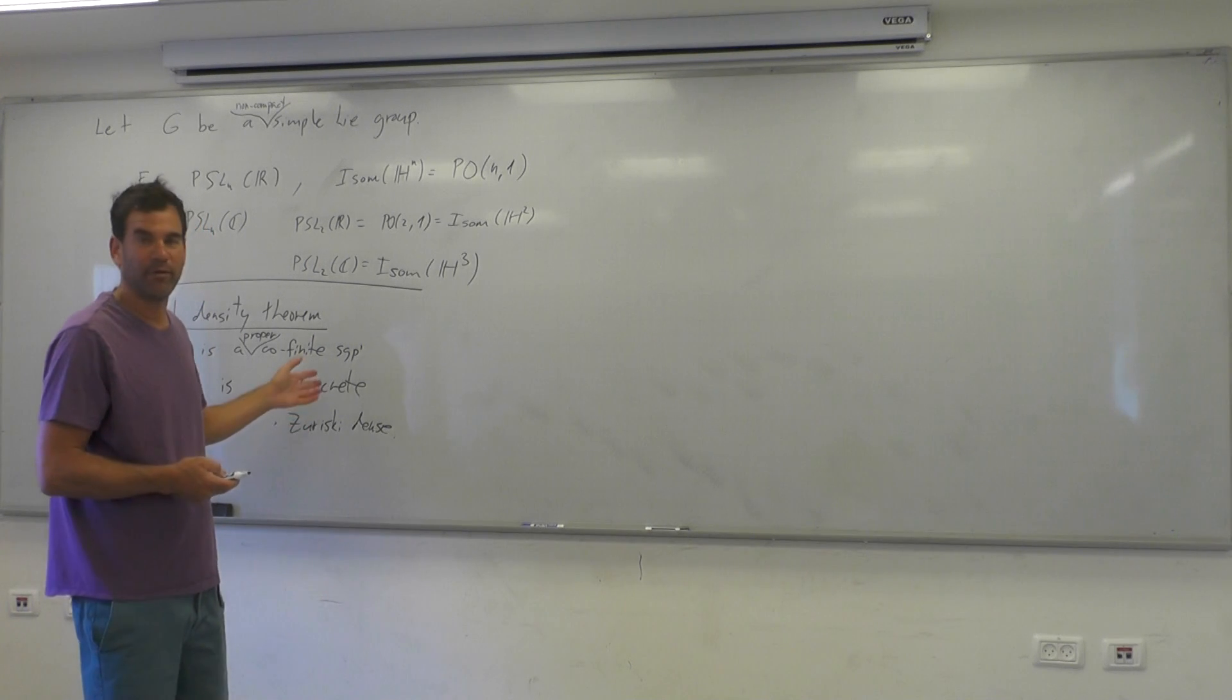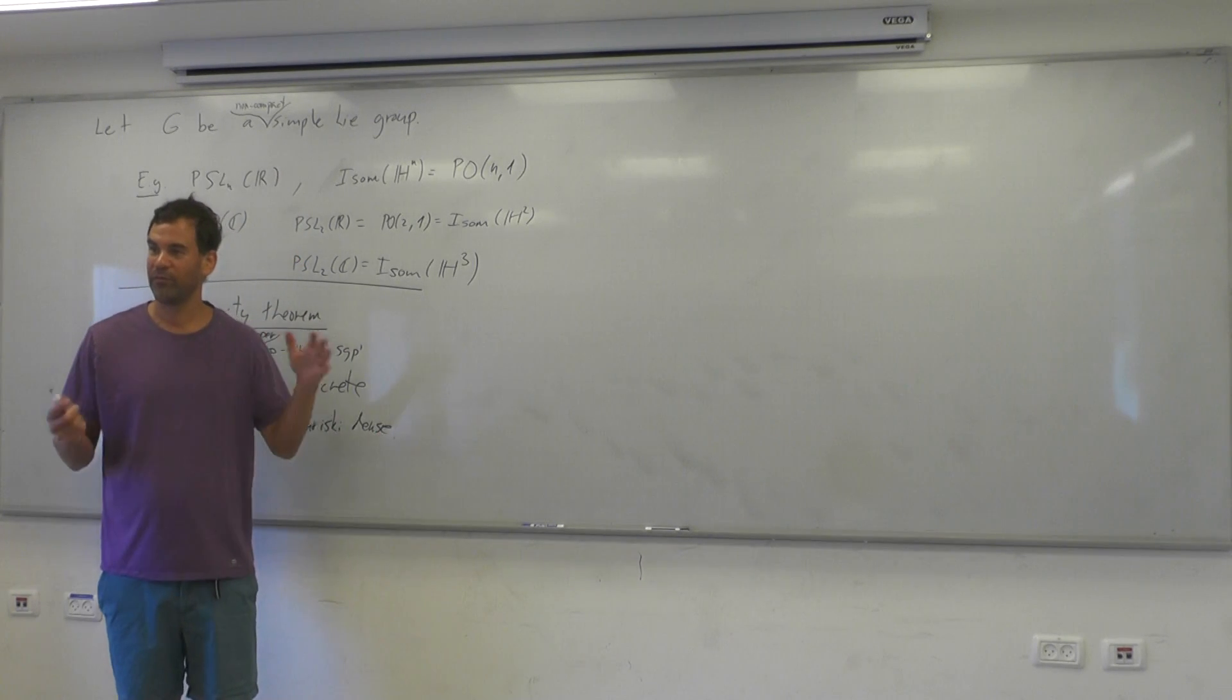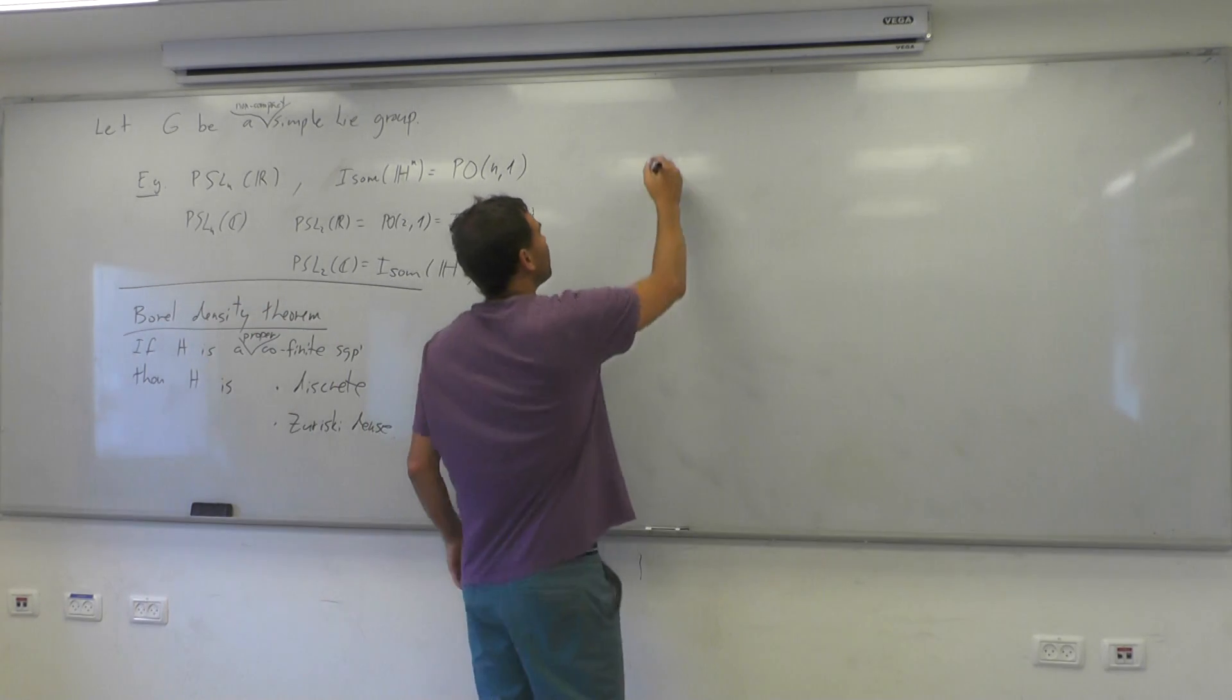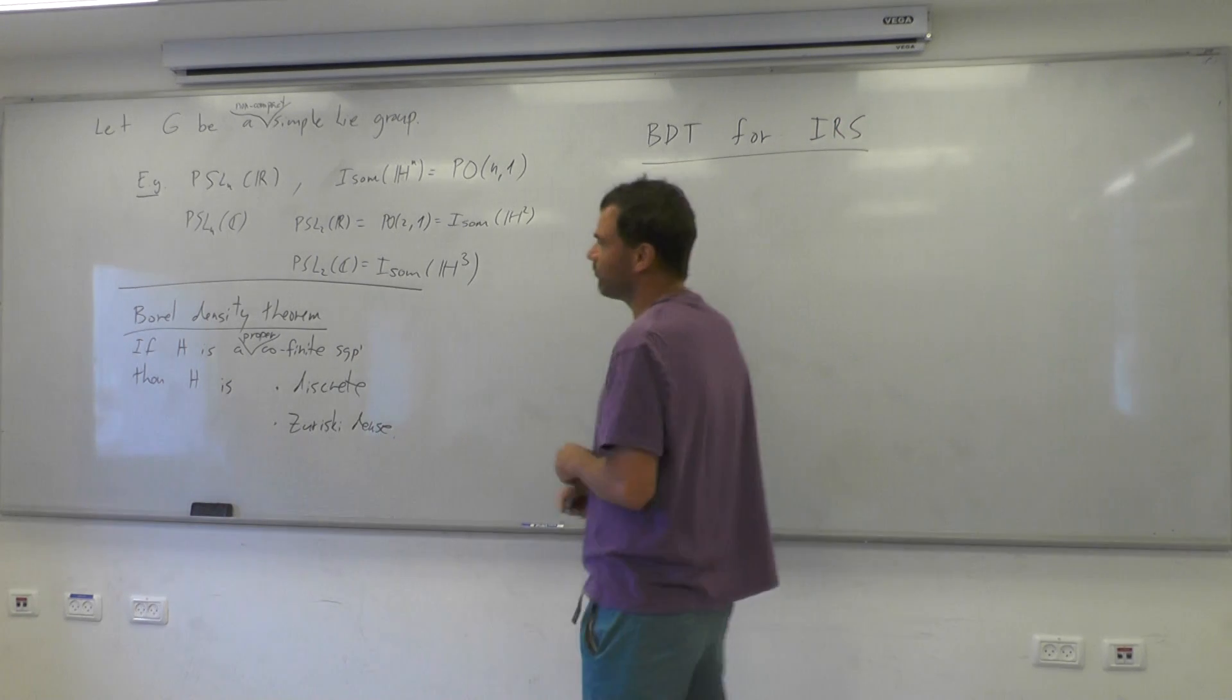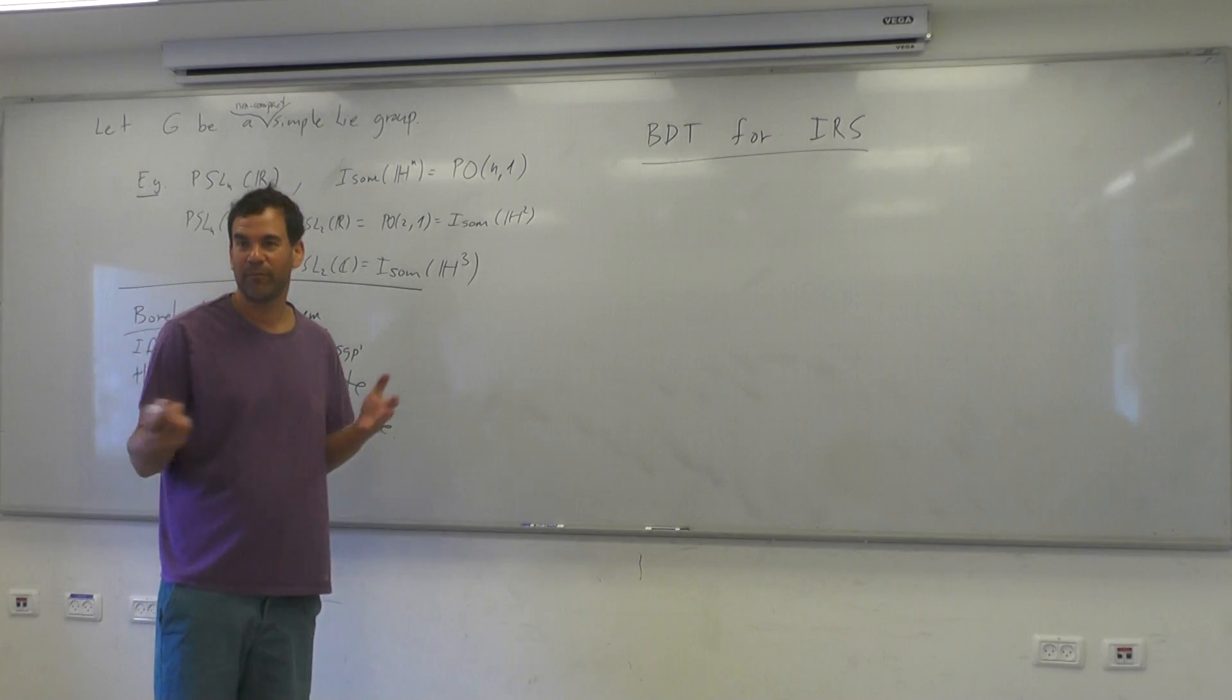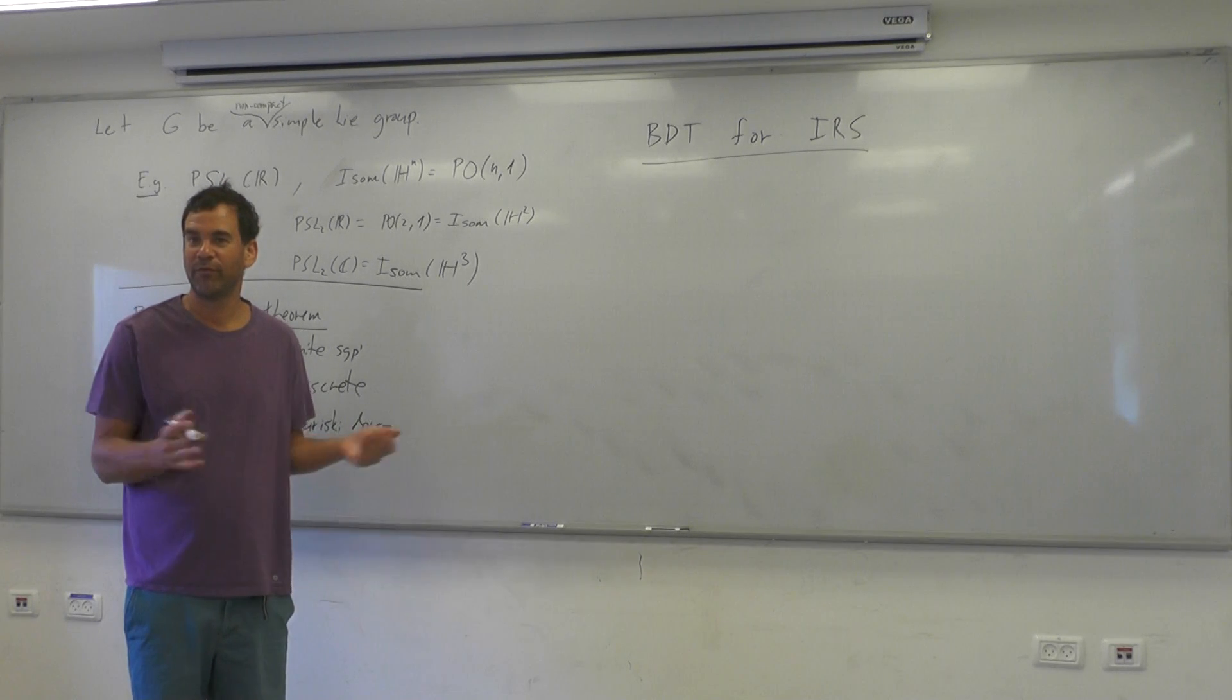And if you apply Furstenberg's proof, you see that it works actually for general invariant random subgroups. So again, this is a matter for another talk, to explain Borel density theorem for invariant random subgroups, but the theorem says the following. So it's also important to know the statement of a theorem, and another thing is to know the proof. Both things are important. But it's valuable to understand the statement even if you don't know the proof. And sometimes it's valuable to understand the proof even if you don't know the statement. In many cases this is the situation - you remember the proof but not the statement.